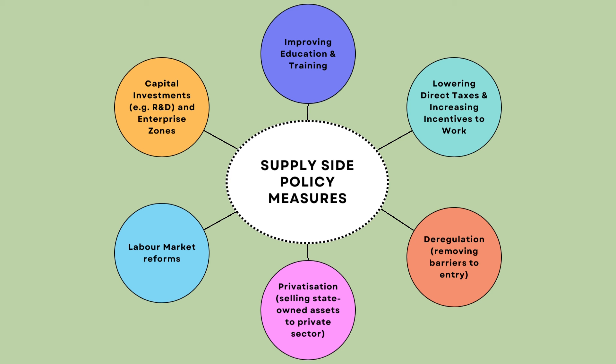Lowering direct taxes or cutting direct taxes will increase incentives for people to work harder. This can lead to an increase in labour supply, labour productivity and also output. A cut in corporation tax will give firms more profit, which may increase the incentive to invest. However, a cut in unemployment benefits may affect the poor and the disabled who are unable to work. Firms may not invest if there is a lack of confidence.